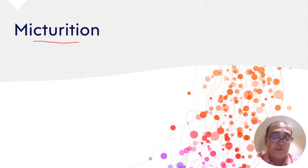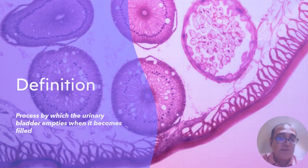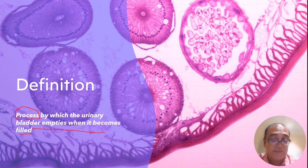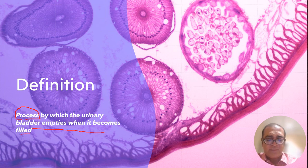What is micturition? Micturition is a mechanism by which the urinary bladder empties when it becomes filled. The process by which the urinary bladder empties when it becomes filled is known as micturition.